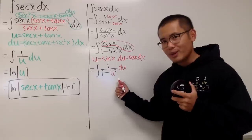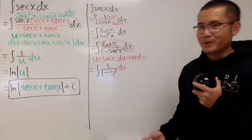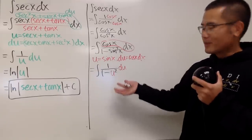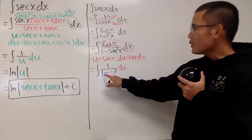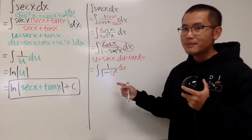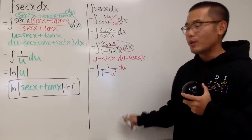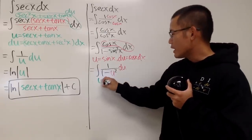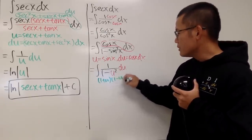We can't do another u-sub because we don't have much to work with. But we have 1 minus u squared, which we can factor, and then use partial fractions. We factor 1 minus u squared as (1 + u)(1 − u), giving us the integral of 1 over (1 + u)(1 − u) du.